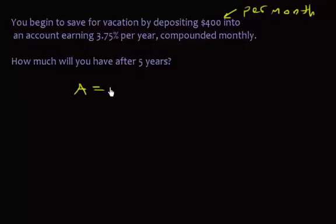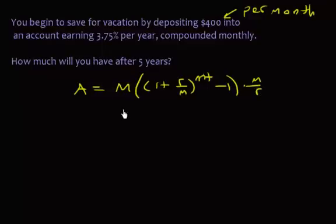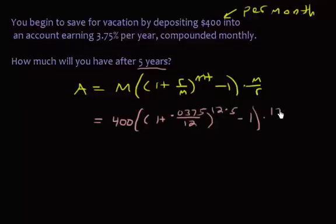Again, sorry, I have little m and big M, so I'll try to keep them separate. OK, so let's see. We have a monthly payment, which is $400. We have an interest rate of 3.75, so that's .0375, divided by 12, because it's compounding monthly, raised to the 12 times, now m and then t is the number of years, which is five years. Minus one, and then it's going to be 12 over the interest rate, which is .0375.